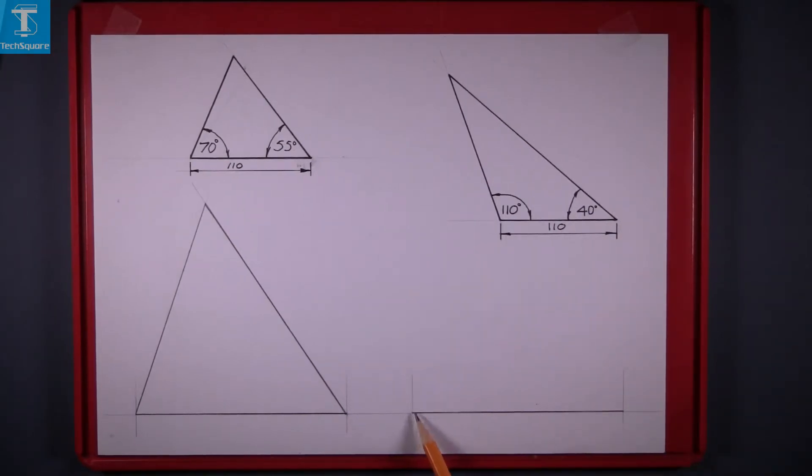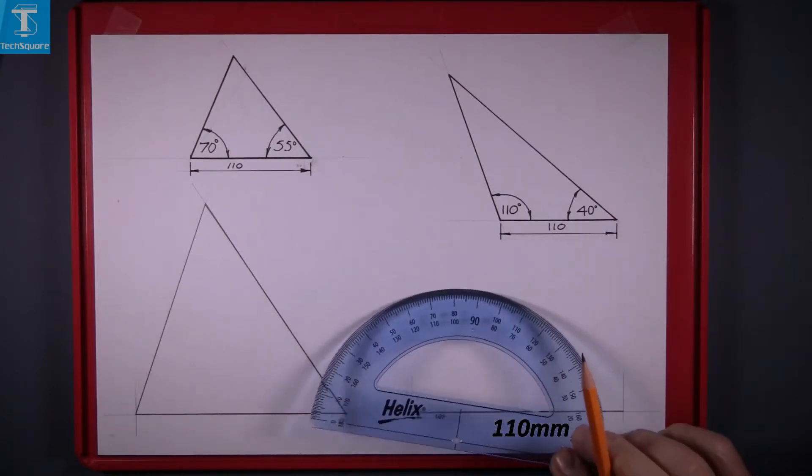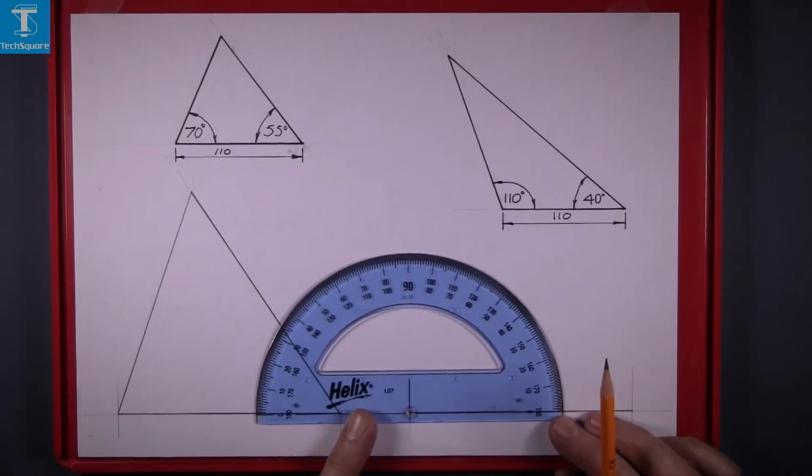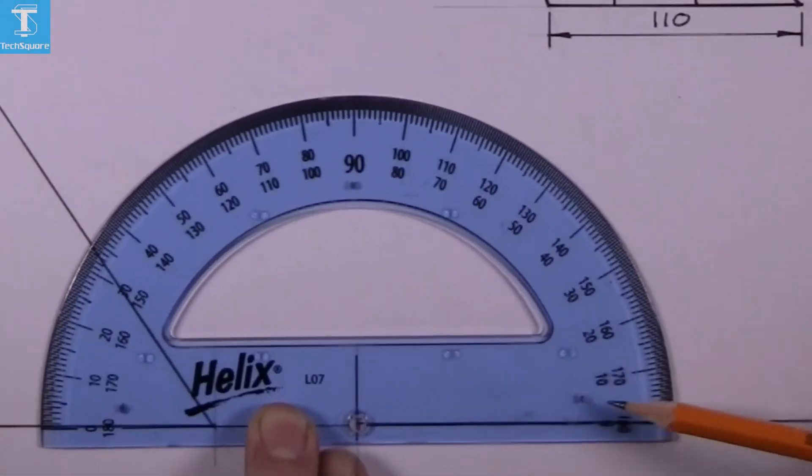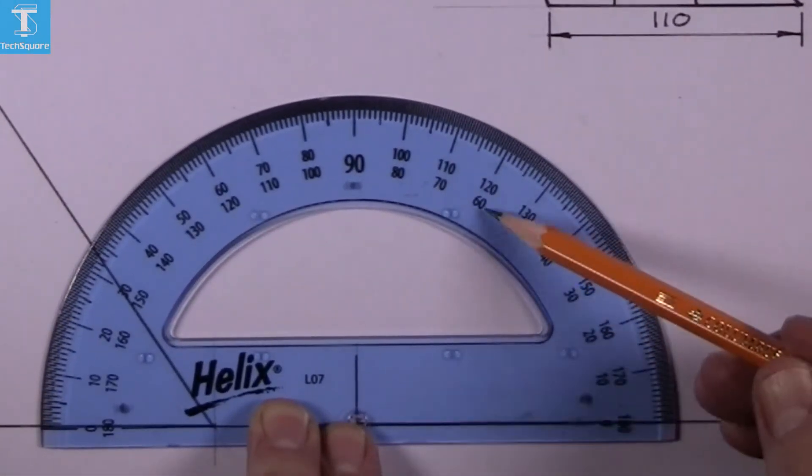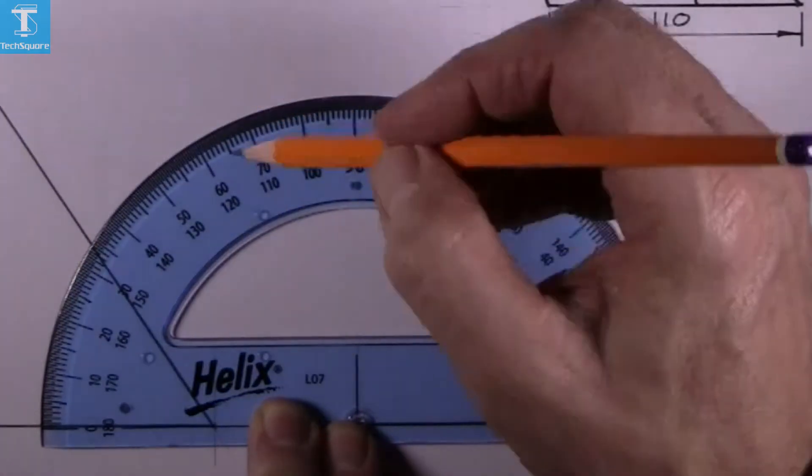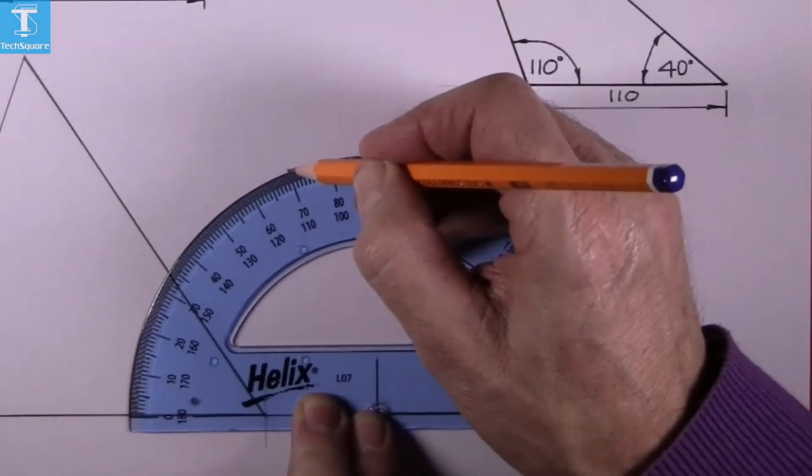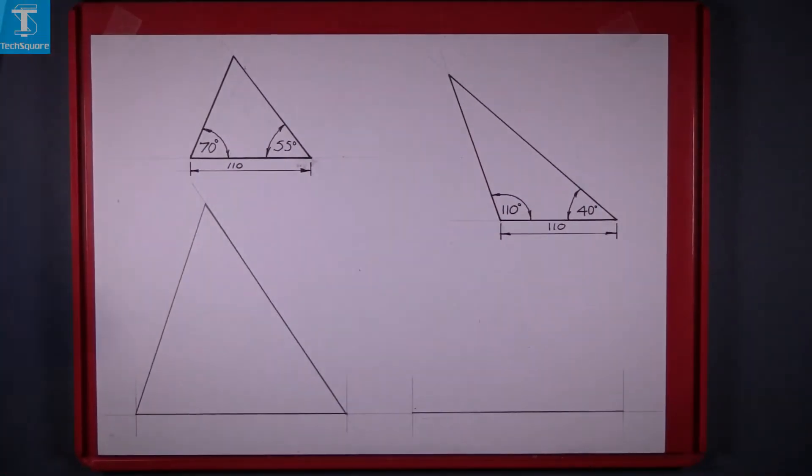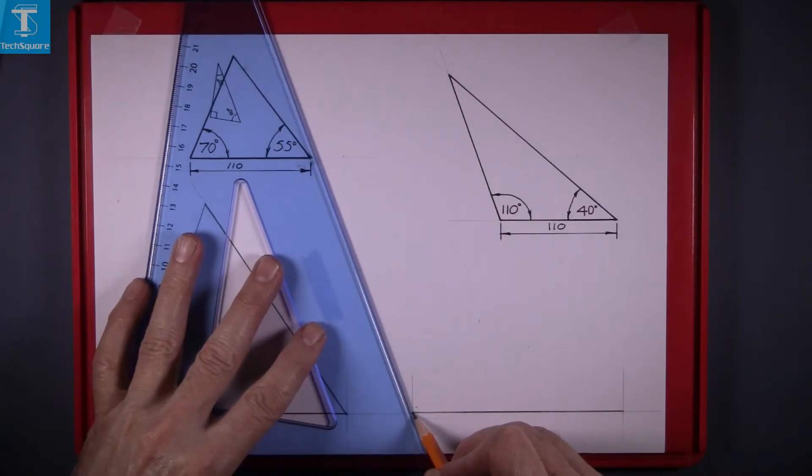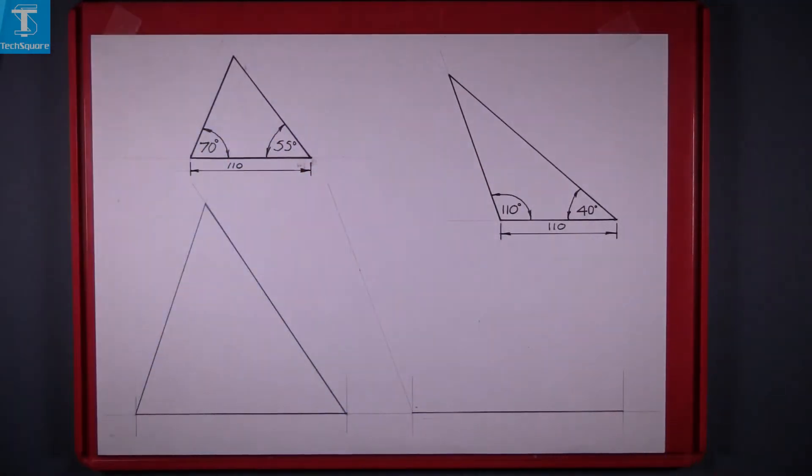So we start off from this bottom corner here again. This is our 110. Put the protractor on the line and line it up with the end of the line. Mark off your angle up to 110 and mark that point there and join the base through that point and that gets you the first line.